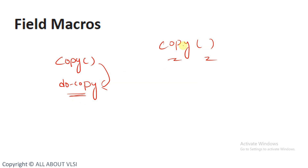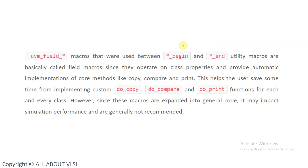Now, without using do copy method or do print method, let's see what is the alternate way for performing functions like copy, compare, and clone. Basically in UVM we have UVM field macros that are used between begin and end utility blocks. These field macros operate on class properties and provide automatic implementations of core methods like copy, compare, and print — so we are not writing any do_copy, do_compare, or do_print. This helps the user save time for implementing custom methods.